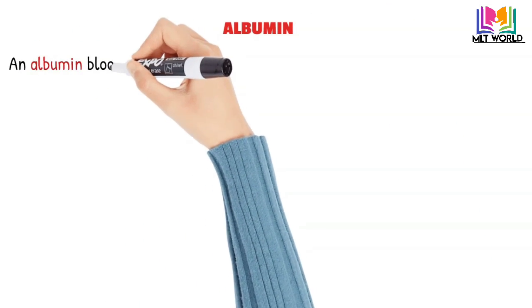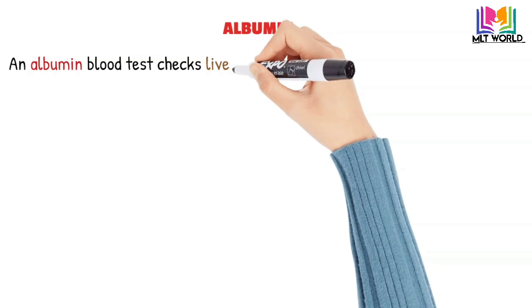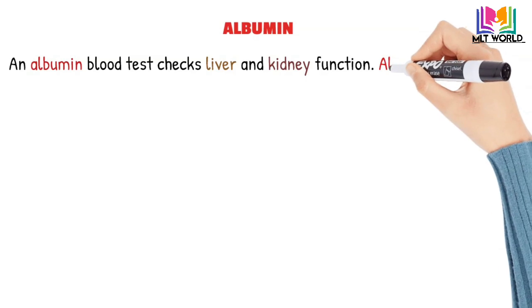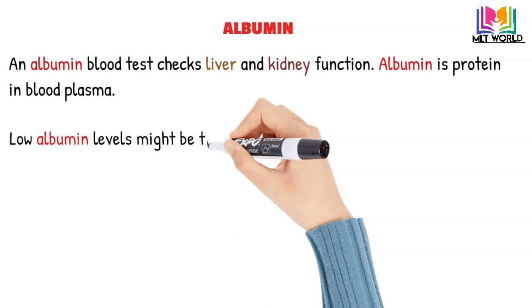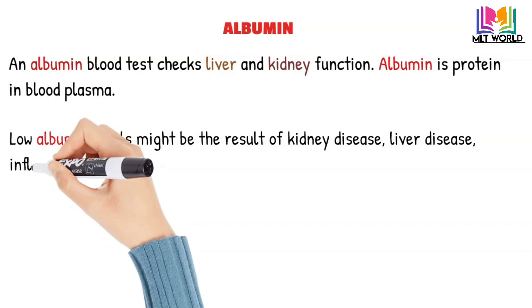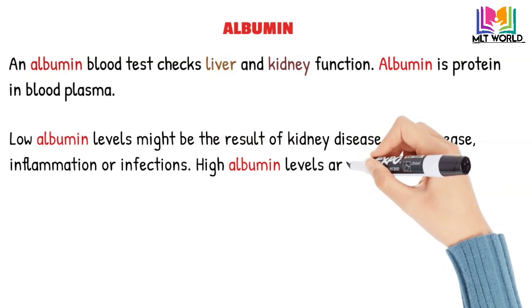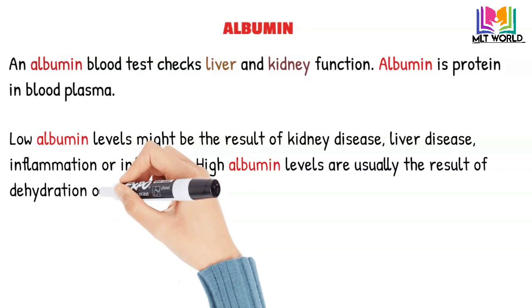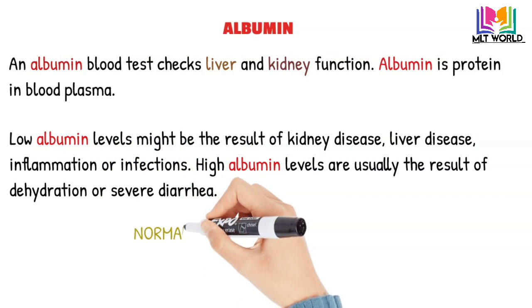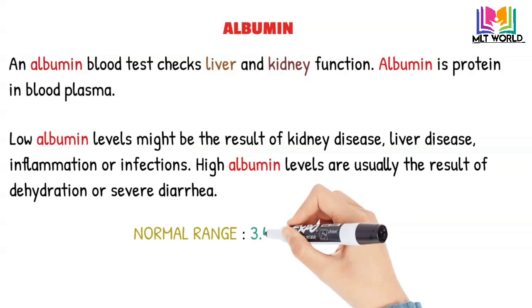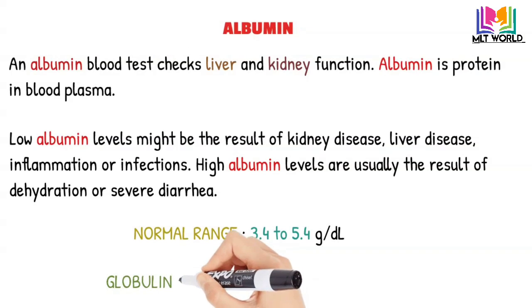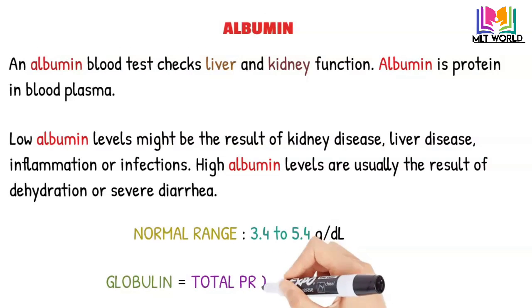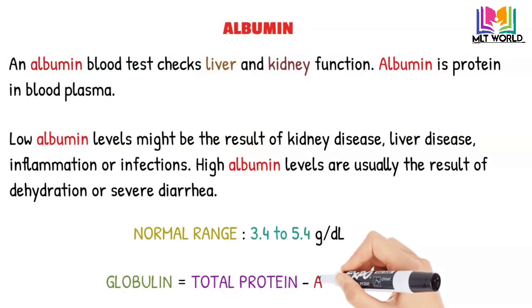Next is albumin, the major protein present in the blood. The albumin test checks liver and kidney function. Albumin is produced by the liver and is present in blood serum or plasma. Low levels of albumin may be the result of kidney disease, liver disease, inflammation, or infections. High albumin levels are the result of dehydration or severe diarrhea. Normal level of albumin is 3.4 to 5.4 g/dL. Globulin is calculated as total protein minus albumin, so we perform total protein and albumin tests to obtain the globulin value.